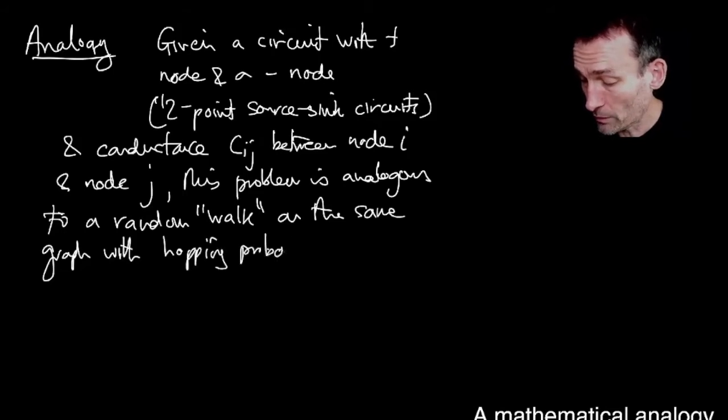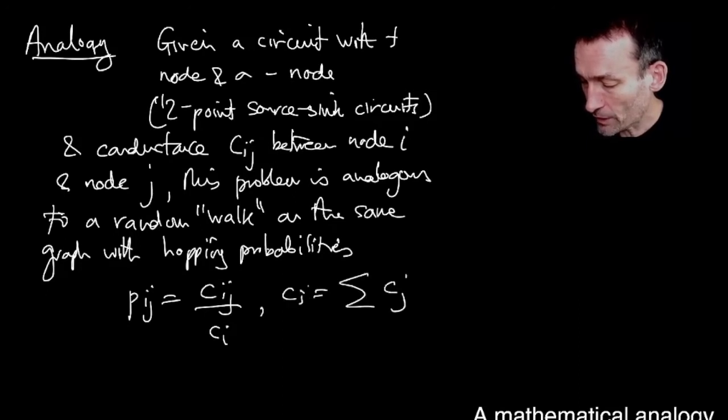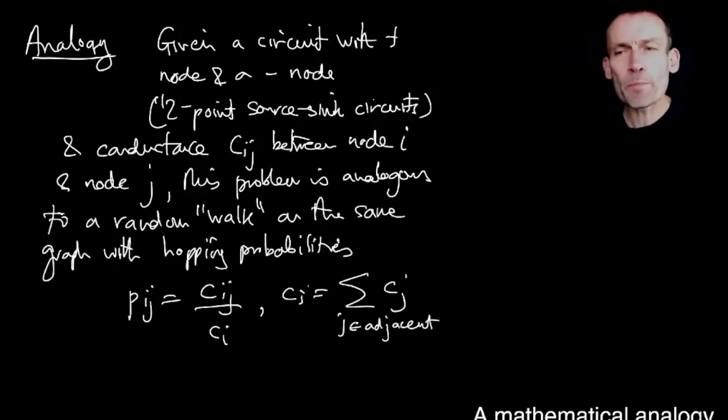With hopping probabilities, I've just defined what those were. Pij being Cij divided by Ci, where Ci is the sum of the conductances from adjacent nodes. Remember, probabilities have got to be less than one. Conductances don't need to be. So some kind of normalisation is going to have to happen here. And here it is. What I do is, if I define the hopping probabilities in a random journey around this same connected graph to be the conductances divided by the sum of the conductances, then the analogy is complete.